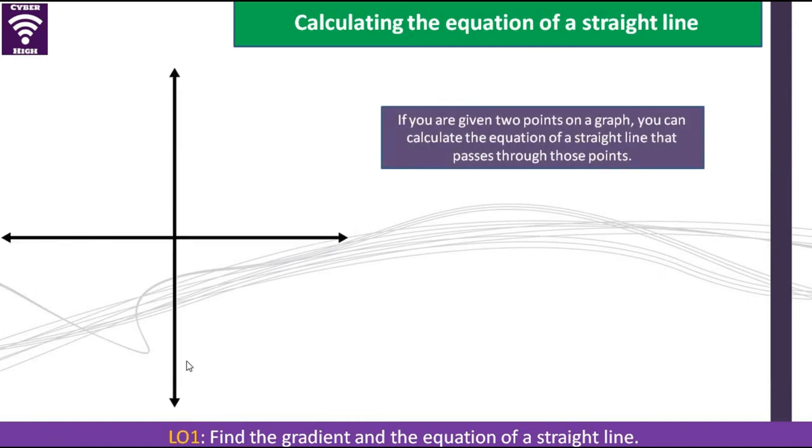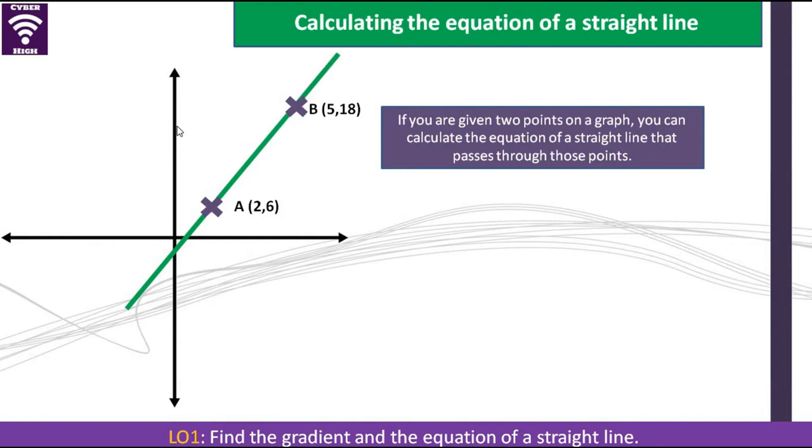When you have two points plotted on the Cartesian plane, you can draw a straight line between them. If you have a point A and a point B on a Cartesian plane, it is always important to know that the horizontal line is the x-axis and the vertical is the y-axis. So you can establish a straight line between these two points.